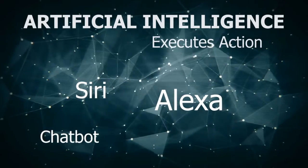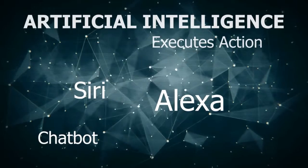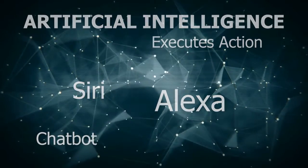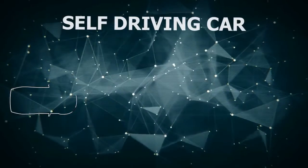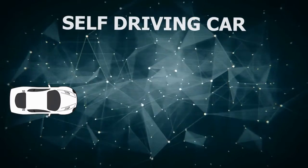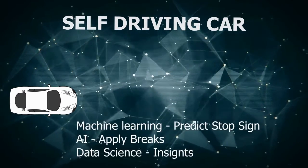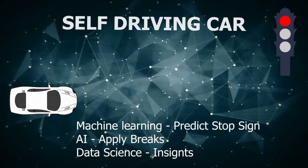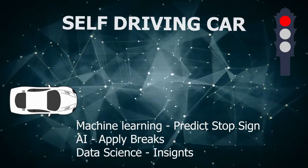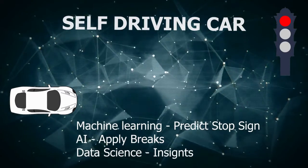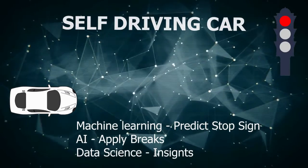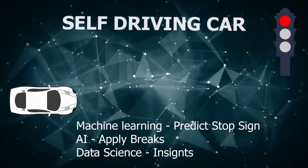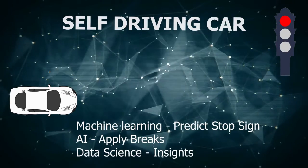Before I complete this video, let me share a case study on how these three fields are applied together. Let's say we are building a self-driving car and we are having issues stopping at stop signs. In that case, we use machine learning models so that the car can predict street-side objects which have a stop sign using the cameras attached to it. We use artificial intelligence to recognize the stop sign and take action to apply the brakes. And we use data science to gain insights on the performance of the car, like speed, effectiveness of stop signs, etc.